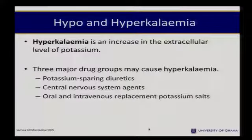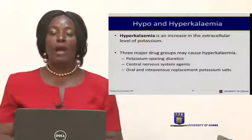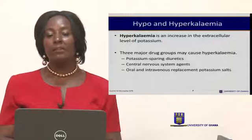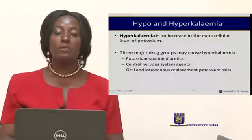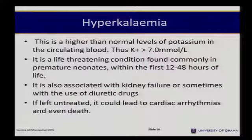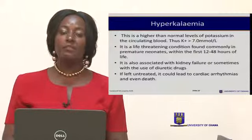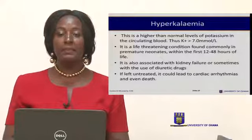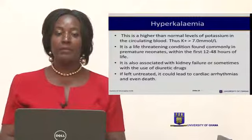Hyperkalemia is the opposite of hypokalemia — it is increased potassium in the extracellular fluid. Potassium-sparing diuretics can cause high levels of potassium because sodium is excreted while potassium is retained. Central nervous system agents and oral and intravenous replacements of potassium salts can also cause this. High levels above 7.0 mmol per liter are life-threatening and commonly found among preterm infants within the first 12 to 48 hours of life. It is associated with kidney failure and use of diuretics, and if left untreated, can result in cardiac arrhythmias leading to death.